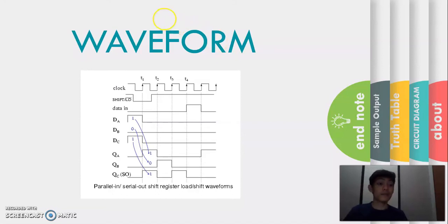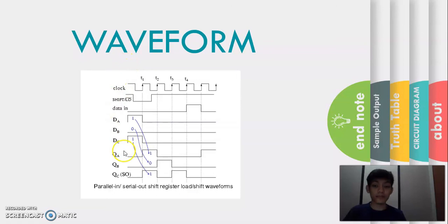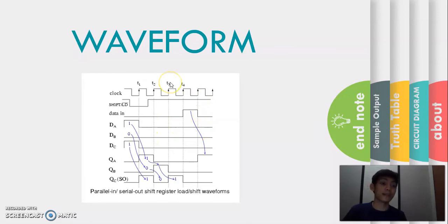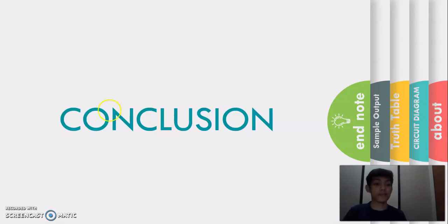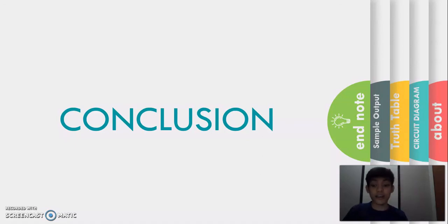Now presented on screen is the waveform pattern of the parallel in serial out shift register when the serial input is loaded. We can also see the waveform pattern that was formed when the serial input of the parallel in serial out shift register is shifted. In conclusion, we can infer that for a 4-bit parallel in serial out shift register, it requires 3 clock pulses in order to produce the valid output.